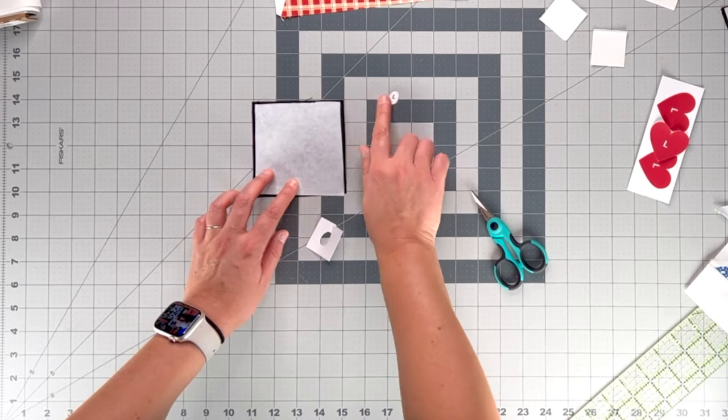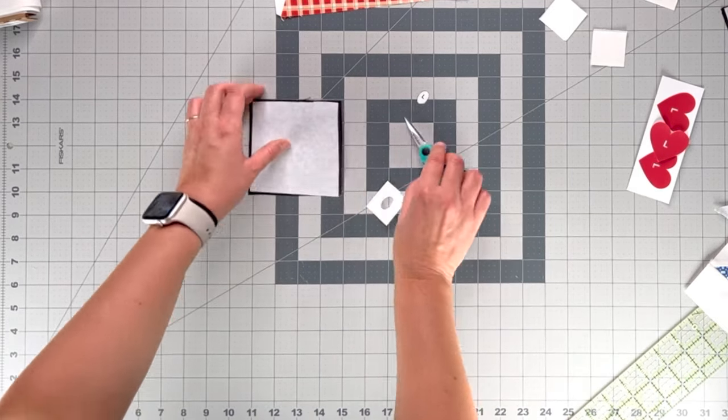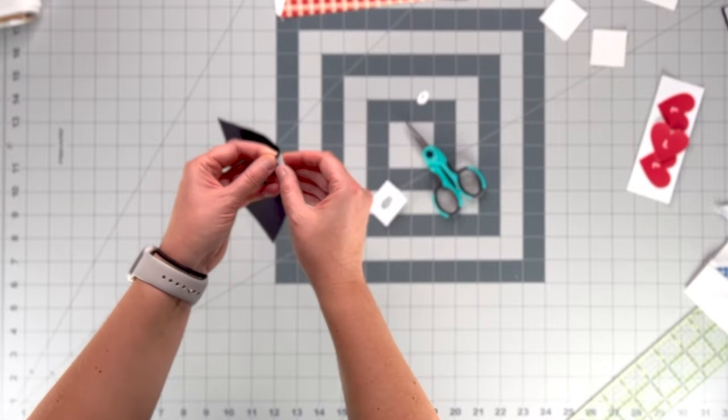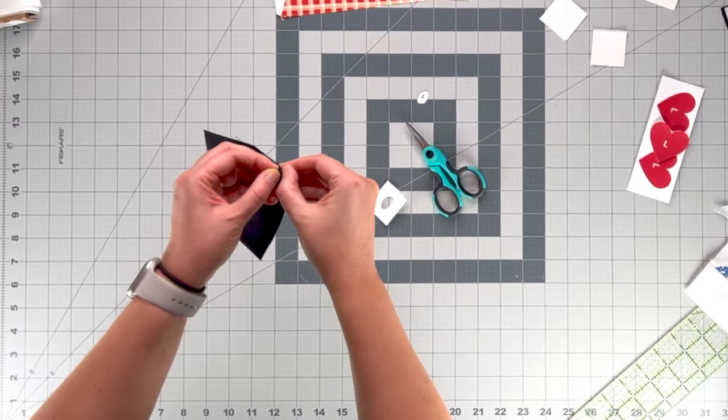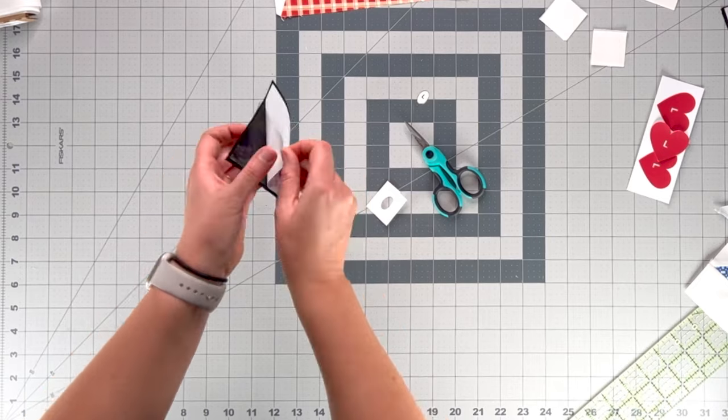And once I draw that on, I can take away that, cut it out, and then we peel this backing off so that we have the glue on the fabric.